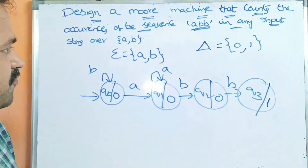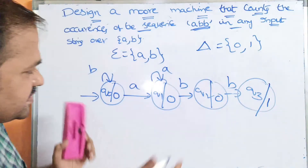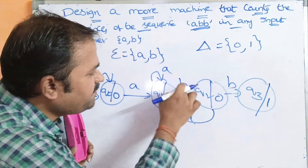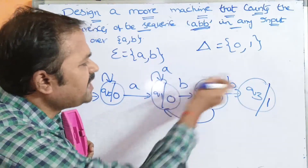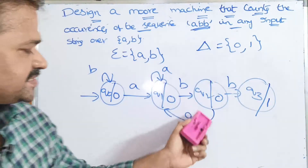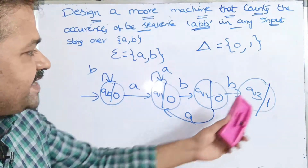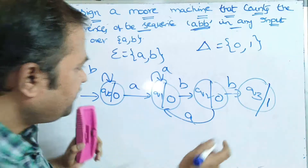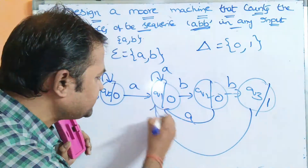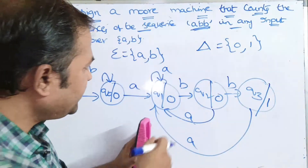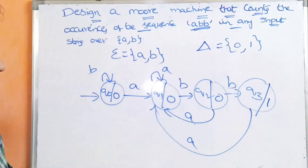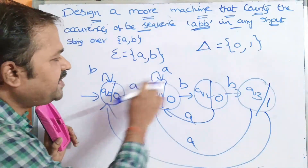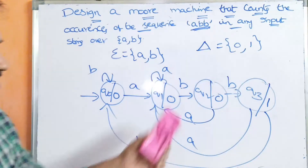Now we need to apply A on Q2. If we make a transition from Q2 on A back to Q1, other situations will be handled. Next we apply both A and B on Q3. Applying A from Q3 goes back to Q1, since after A we can have BB to form the ABB sequence. Applying B from Q3 goes to Q0, since after B we can still have ABB.